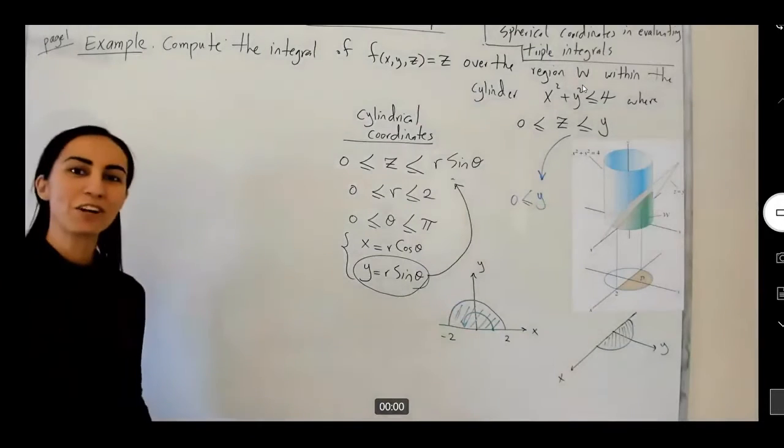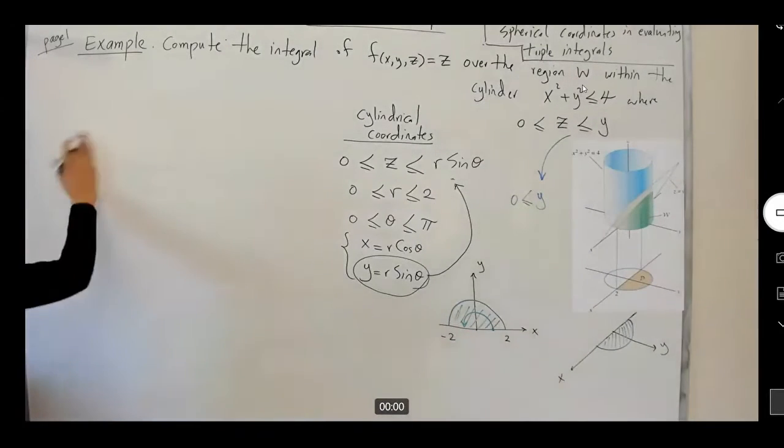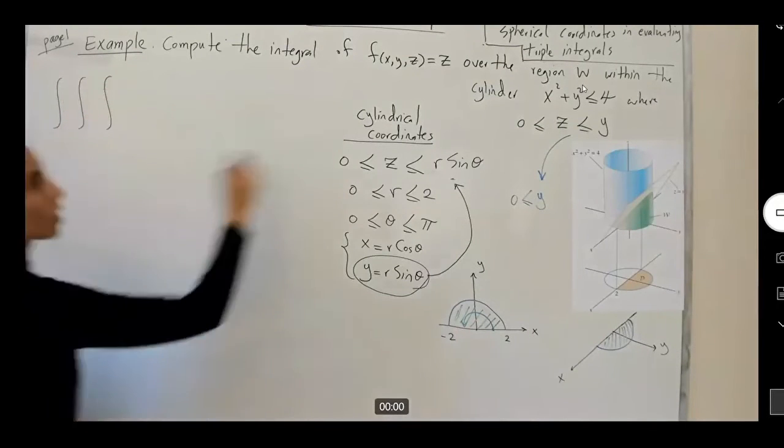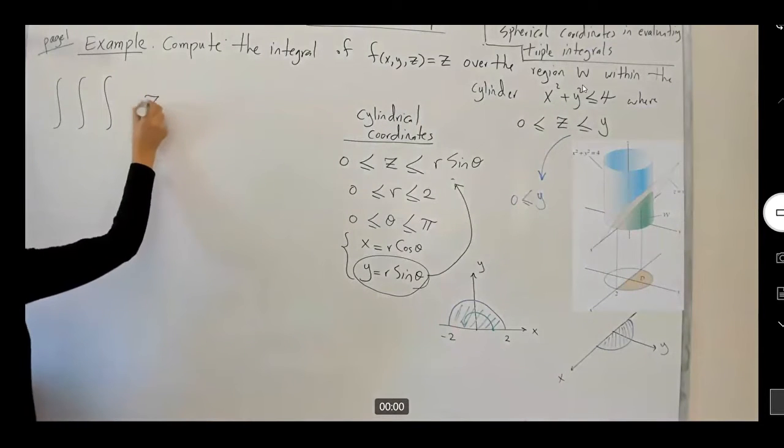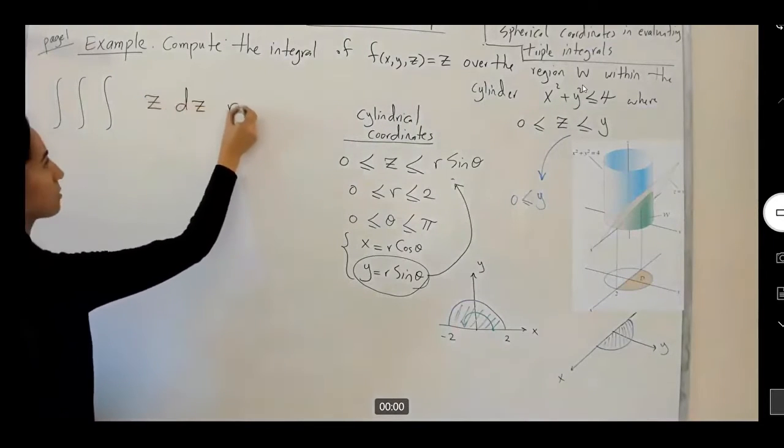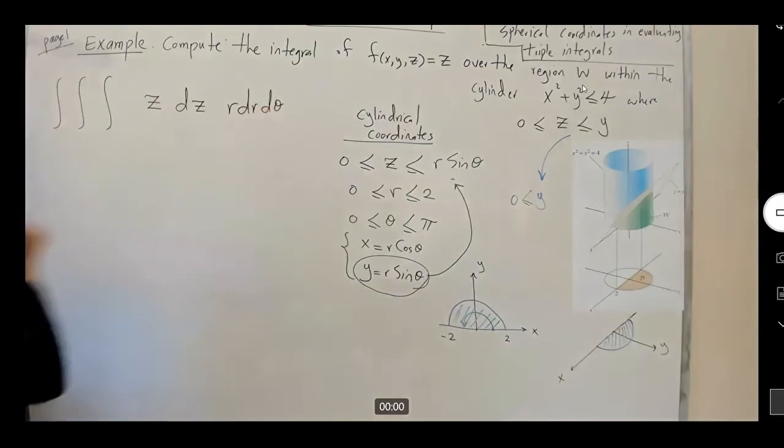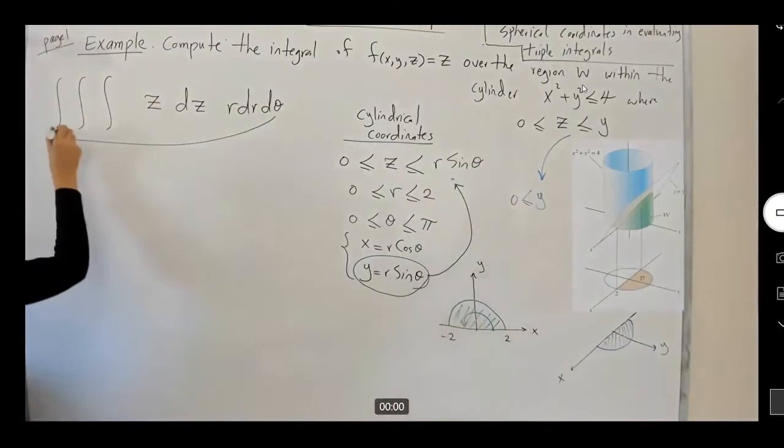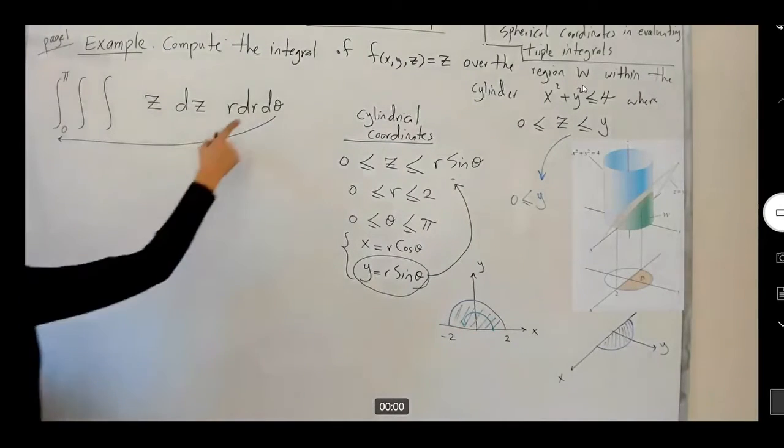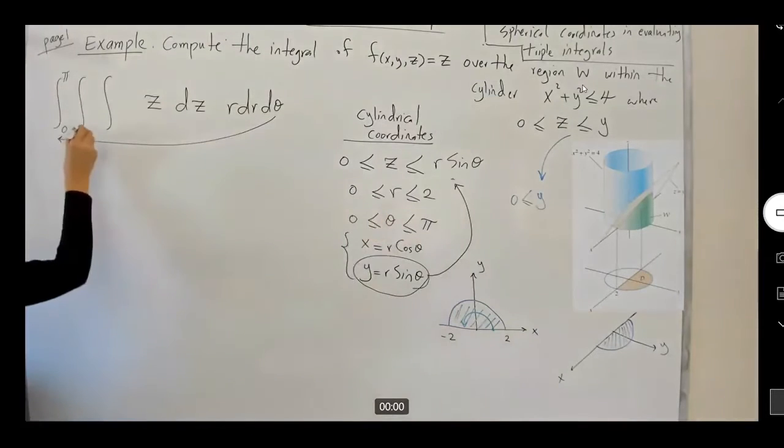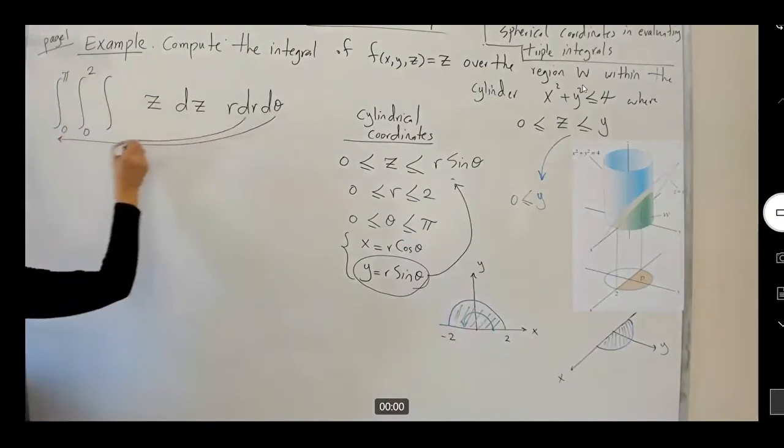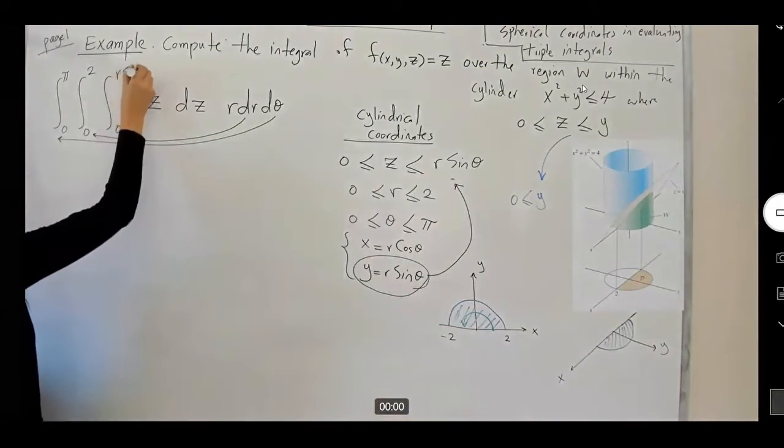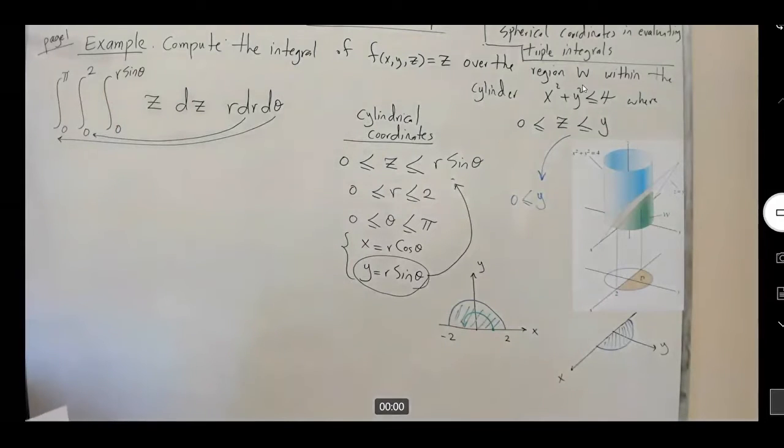So, now we're ready to set up our triple integral and start. We're ready to set up our triple integral of a function z, dz, r, dr, dθ. I know my theta is bounded between 0 to π. I have my r in between 0 and 2. And my z is bounded between 0 and r sine theta. Perfect.